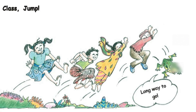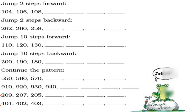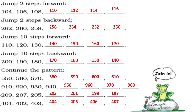Class jump: jump two steps forward starting from 104 — 104, 106, 108, 110, 112, 114, 116. Here we are jumping two steps forward.